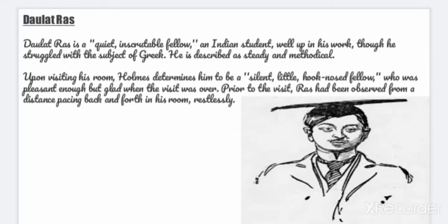Next is Mr. Raz, a quite inscrutable fellow, an Indian student. Well up in his work, though he struggled with the subject of Greek, he is described as steady and methodical. Upon visiting his room, Holmes determines him to be a silent little hook-nosed fellow who was pleasant enough but glad when the visit was over. Prior to the visit, Raz had been observed from a distance pacing back and forth in his room restlessly.